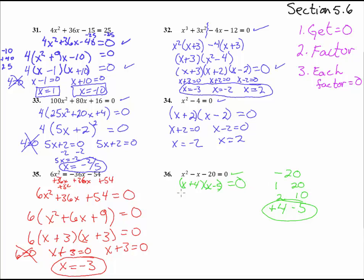Factored. Now we've got to have each factor. x + 4 equals 0, which gives us x equals a negative 4. And then x - 5 equals 0, which gives us x equals 5. And those are two answers. Good deal.